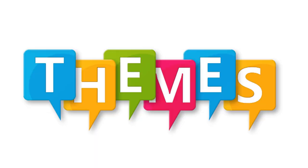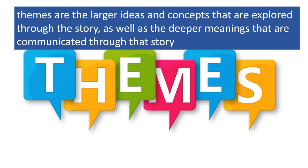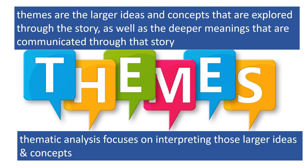Because analyzing literature always involves analyzing the deeper meaning of the literary work, the second kind of analysis that we will be learning and practicing in English 123 is thematic analysis. You can think of the themes of a work of literature as being the larger ideas or concepts that are explored through its story, as well as the deeper meanings that are communicated through that story. Thematic analysis focuses on interpreting those larger ideas and concepts.